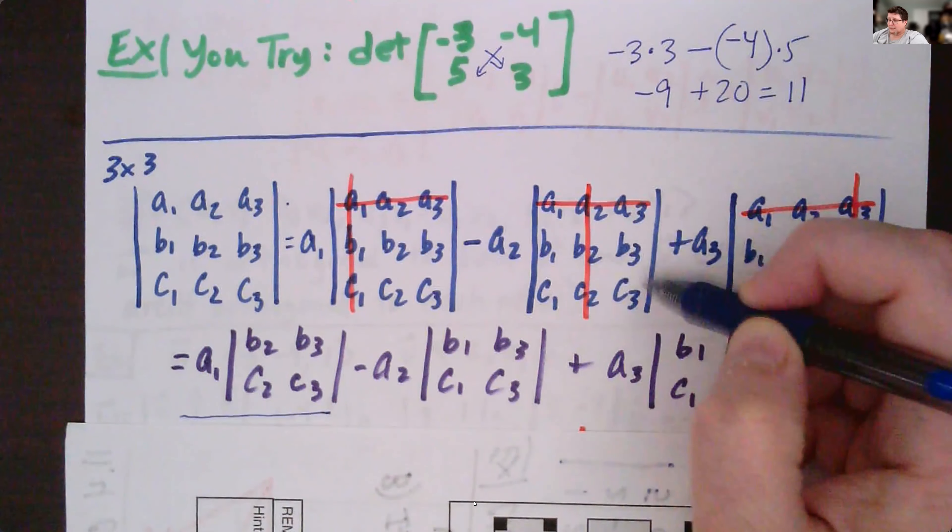You've got to remember that — the middle one is minus, this is a really big point. Finally, there is A3, doing the third column. Cross off the top row and the third column. What's left is the matrix B1, B2, C1, C2.